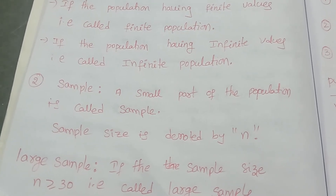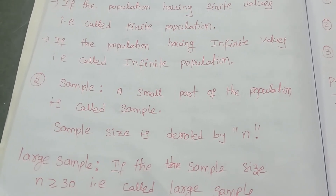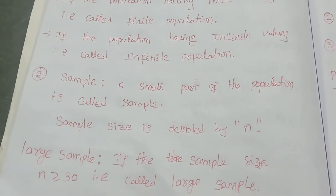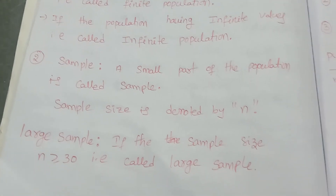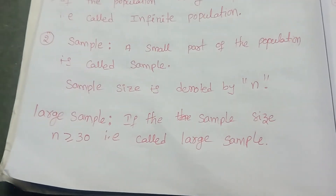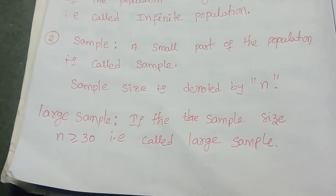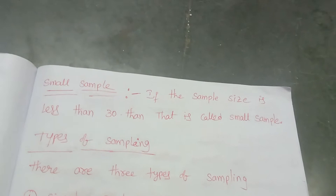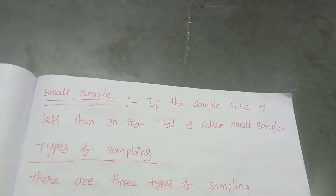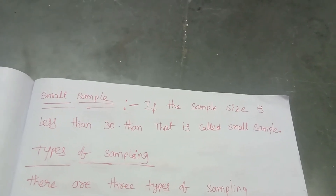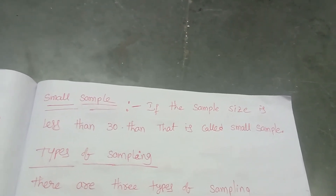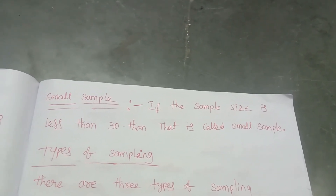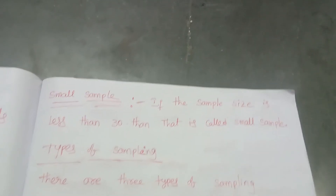Randomly means that is my choice without any biasness. If I am taking 10 members, those 10 members are called the sample. If the sample size is greater than or equal to 30 that is called large sample; if less than 30 that is called small sample. Based on large and small sample we have different tests, that's why we separate them.